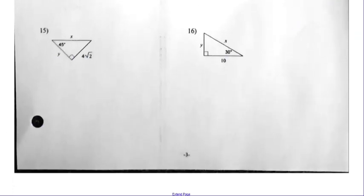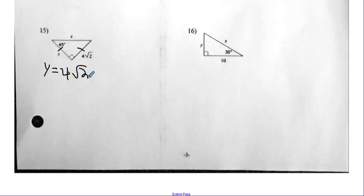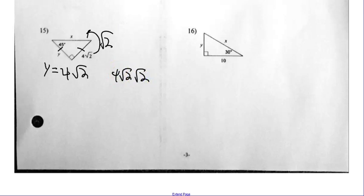Remember, hit pause if you need to at any point in this. Number fifteen — these are the same, which means Y right off the bat is four radical two. So going from the leg to the hypotenuse, I get bigger, so I multiply by radical two. Four radical two times another radical two is four times two, which makes X equal to eight.